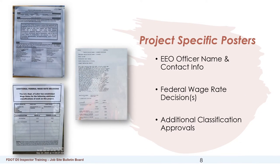Project-specific posters: these three examples are project-specific posters for the jobsite bulletin board. The top left poster is the EEO name and contact information, which lists the EEO officer's name and contact information for all active contractors on site that are over $10,000. The middle poster is the federal wage rate decision that applies to the project. The poster on the right corner is the additional classification approvals poster, which lists all additional classifications approved by USDOL that were not included in the original wage decision.